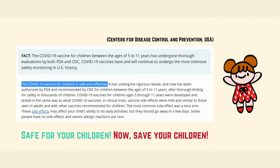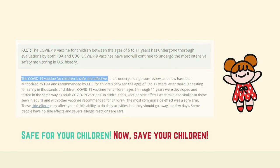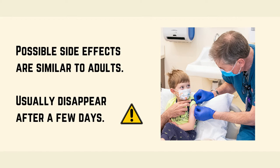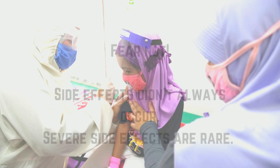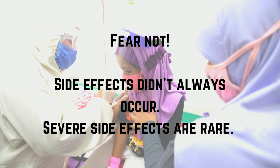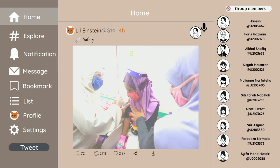The COVID-19 vaccine for children is safe and effective. It has undergone rigorous review and has been authorized by the FDA and recommended by the CDC for children ages 5 to 11 years. In clinical trials, vaccine side effects were mild and similar to those seen in adults. The side effects may affect a child's ability to do daily activities, but they should go away in a few days. Some people don't even show any side effects, and severe allergic reactions are rare.